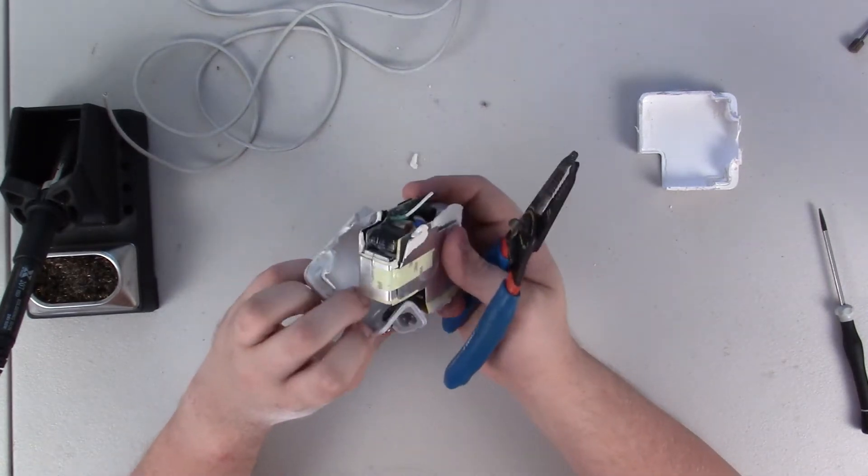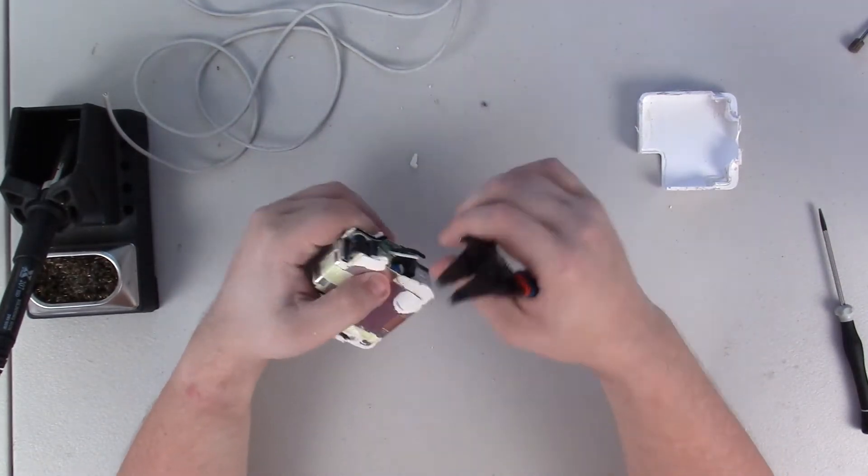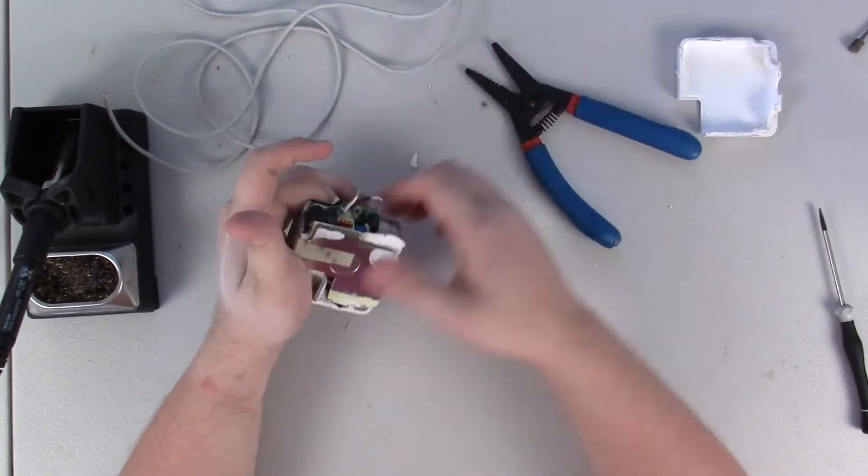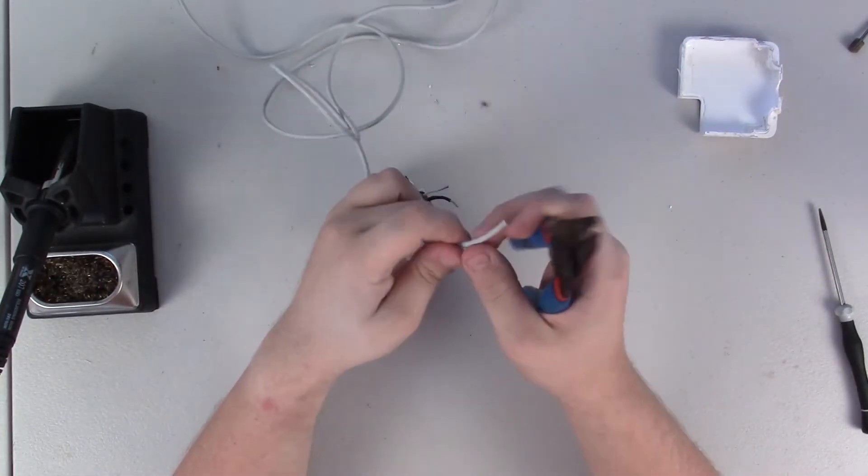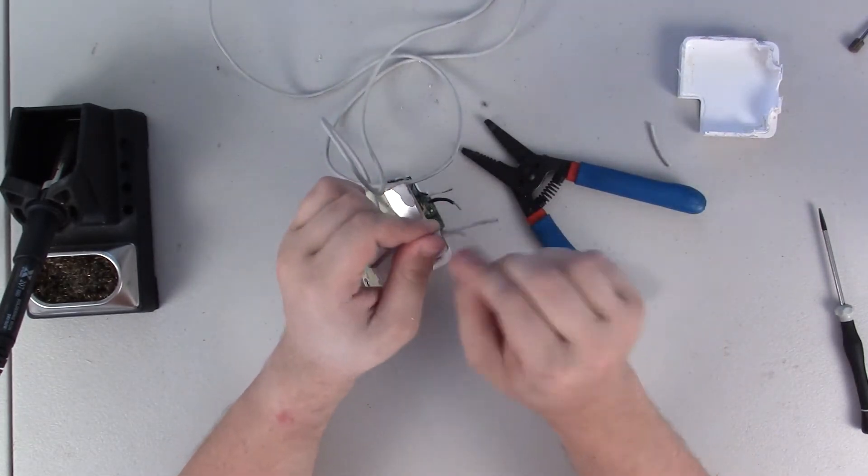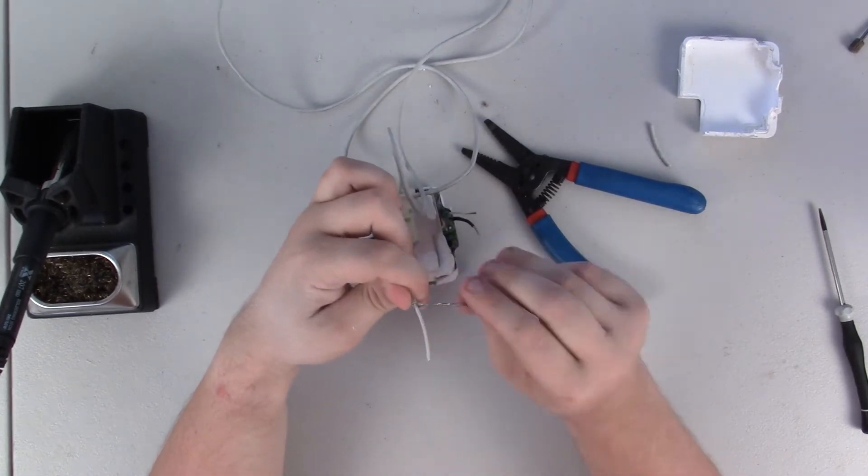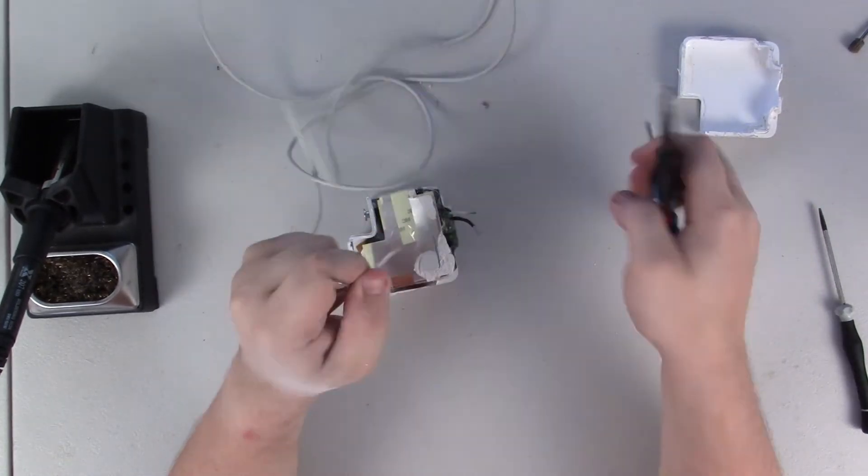Then you take a new cable, and you can find these cables on eBay or wherever for about 10 or 15, maybe 20 bucks a piece, which is a lot cheaper than $80 for a new charger. You just go ahead and you solder it together.